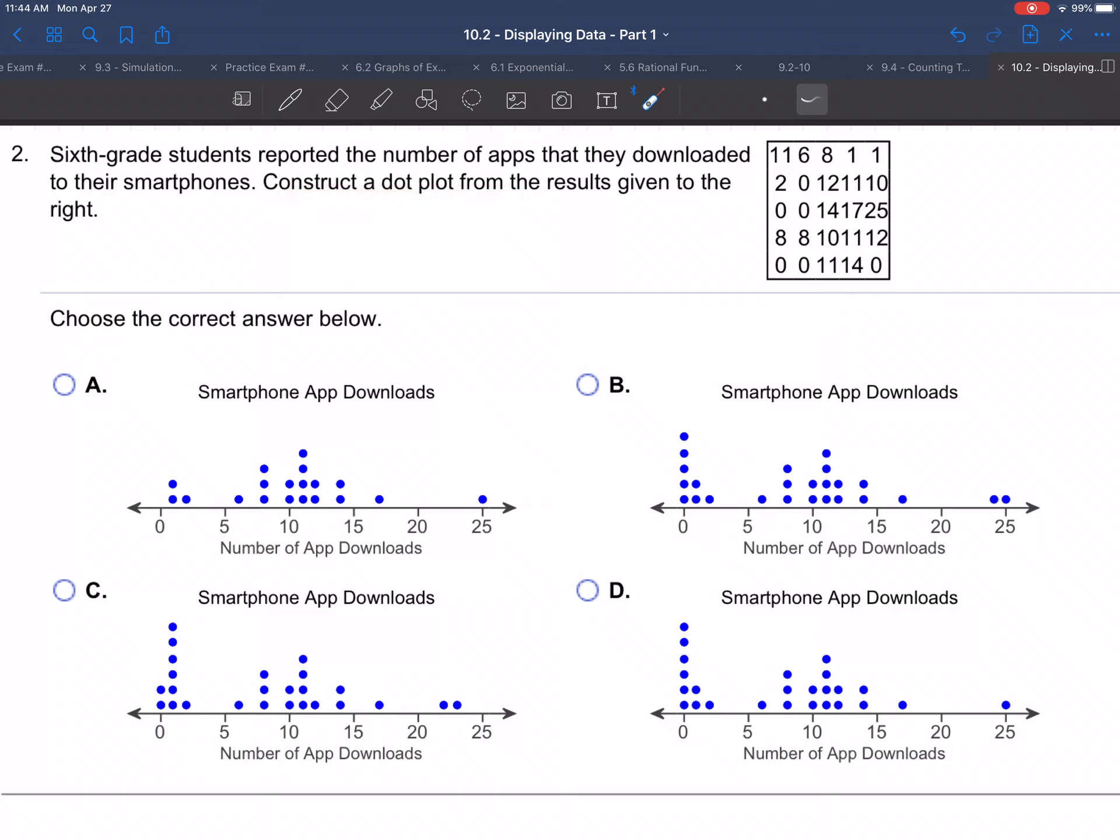So if you look at this table over here, this student downloaded 11 apps, this student 6, then 8, then 1, then 1, etc. So these are the different numbers: 2, 0, 12, 11, 10, etc.